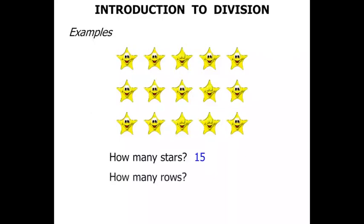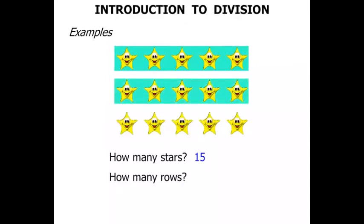How many rows? Generally with rows we go across. 1, 2, 3. We've got 3 rows across.